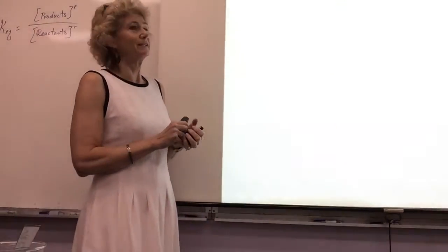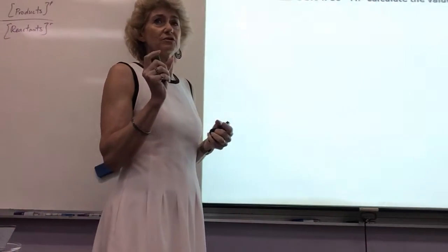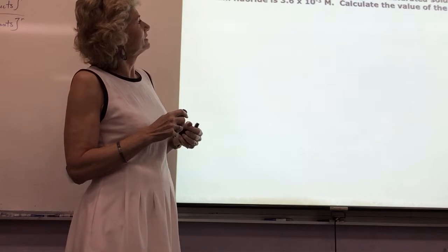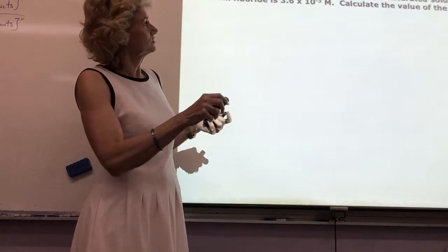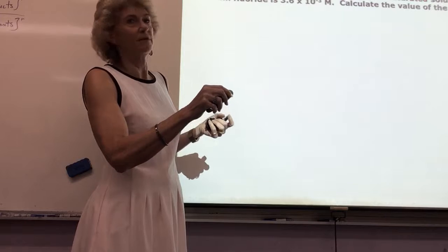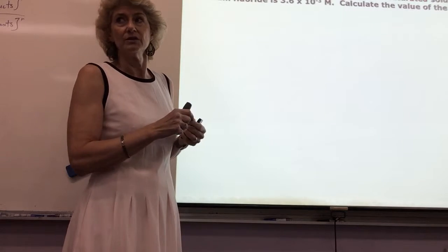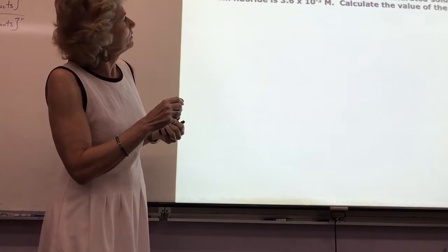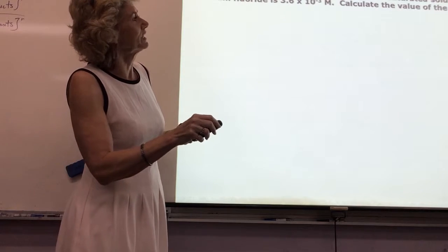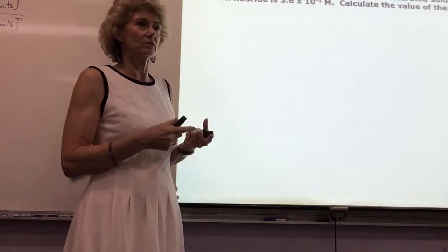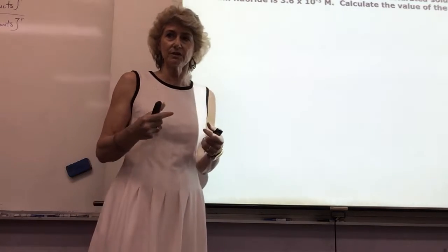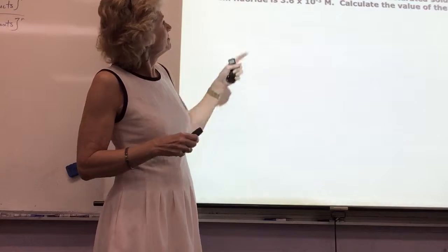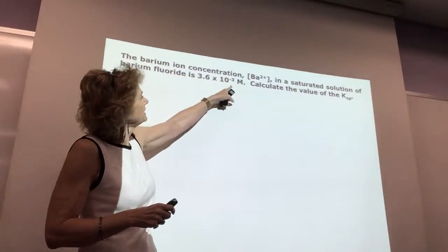Here's how it's written in a question. 'The barium ion concentration in a saturated solution' — that right there tells you there's solid on the bottom of the beaker. You don't have to worry about how much solid there is. We're looking for the Ksp, and we know it's in equilibrium with the solid. The barium ion concentration is given as 3.6 × 10⁻³, and it's barium fluoride.